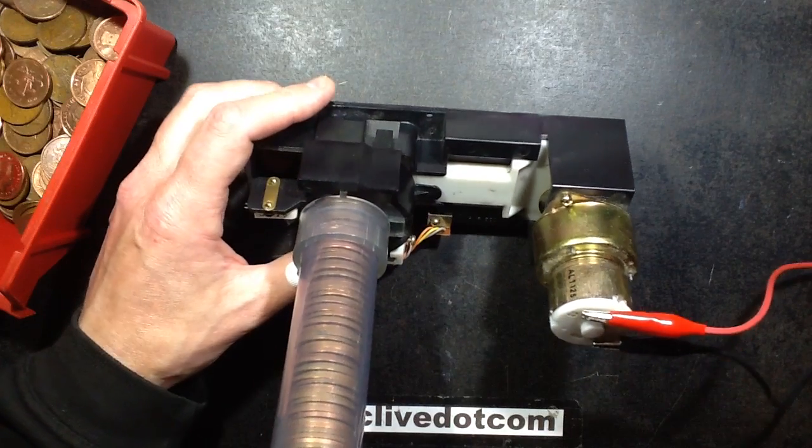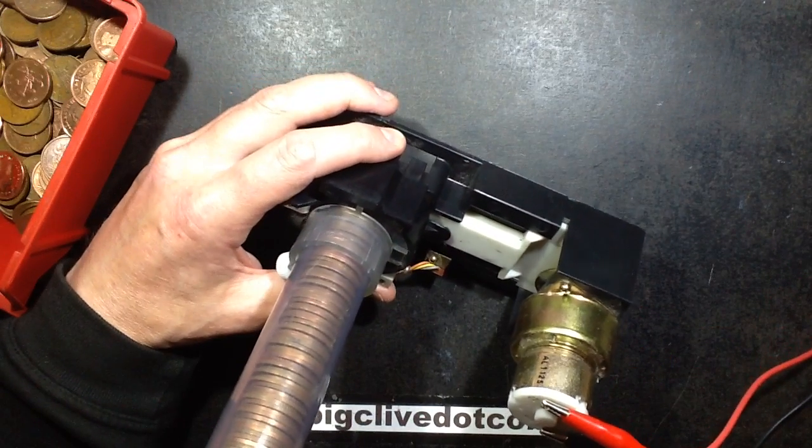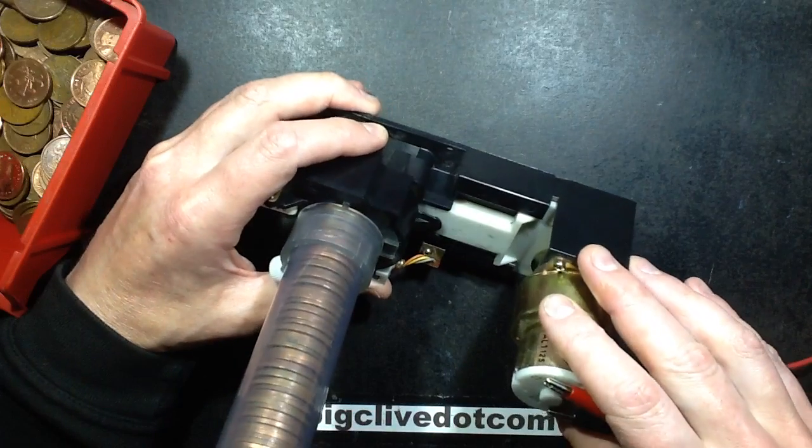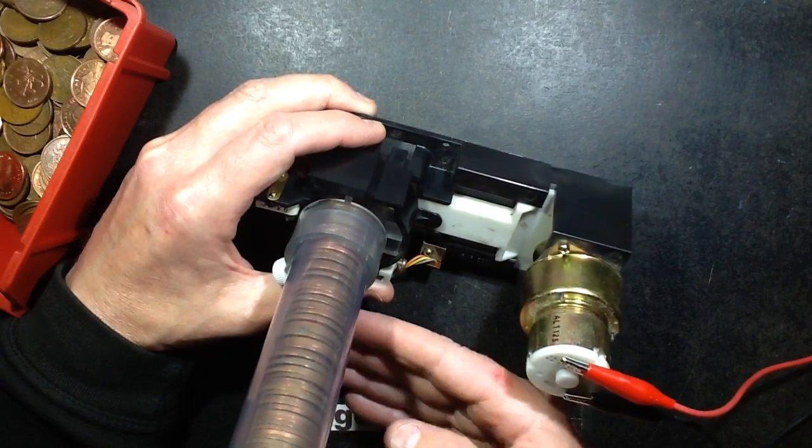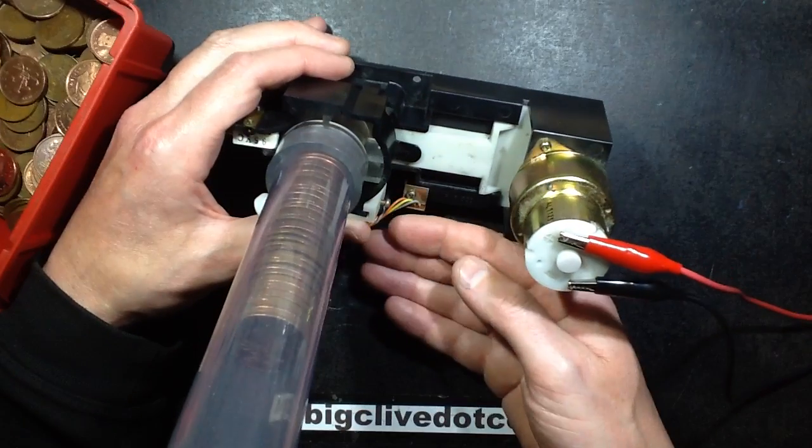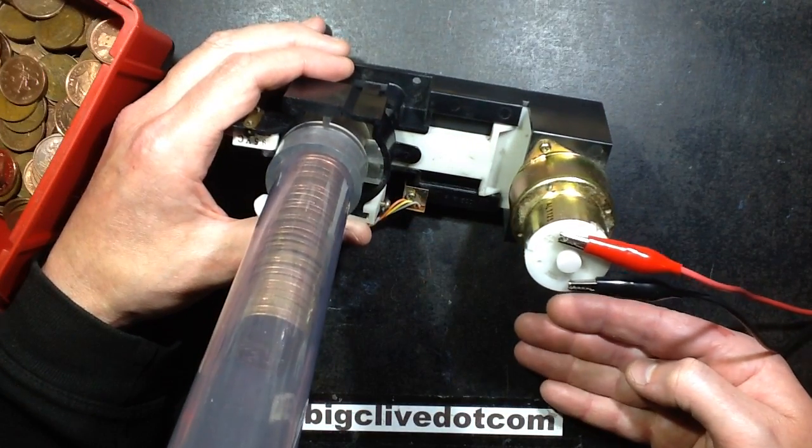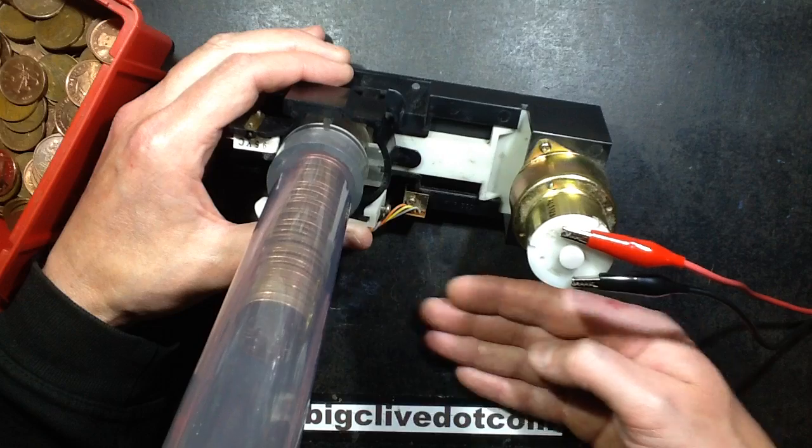This is another style of coin payout mechanism from a gaming machine, and it's quite unusual in that it looks a bit like the old solenoid versions. It basically had a tube of coins and they had a solenoid plunger that would get pulled back by the solenoid and then it would return under spring pressure and it would push the coins out.